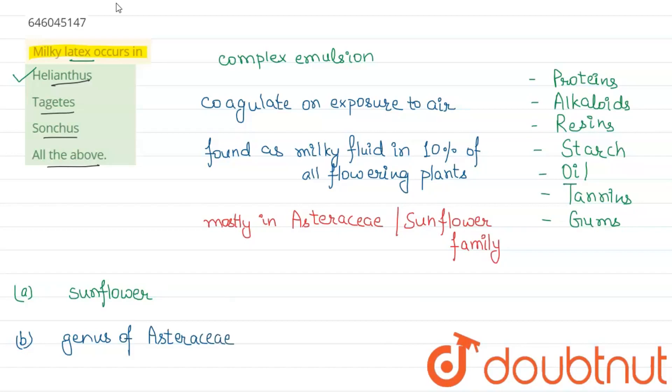Coming to the third option, we have Sonchus. Sonchus is a genus of flowering plants also within the sunflower family or the Asteraceae family. So this option is also correct.